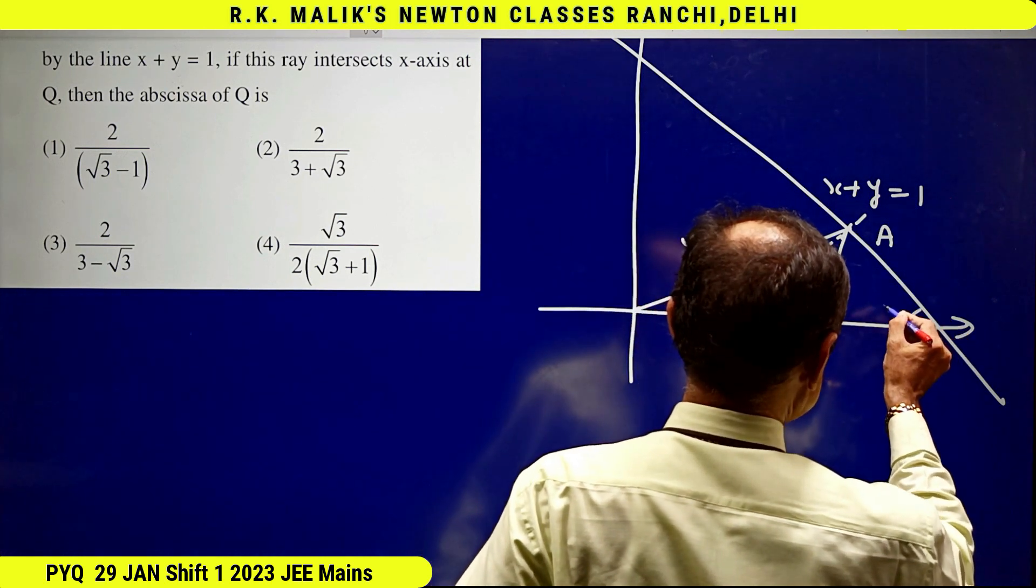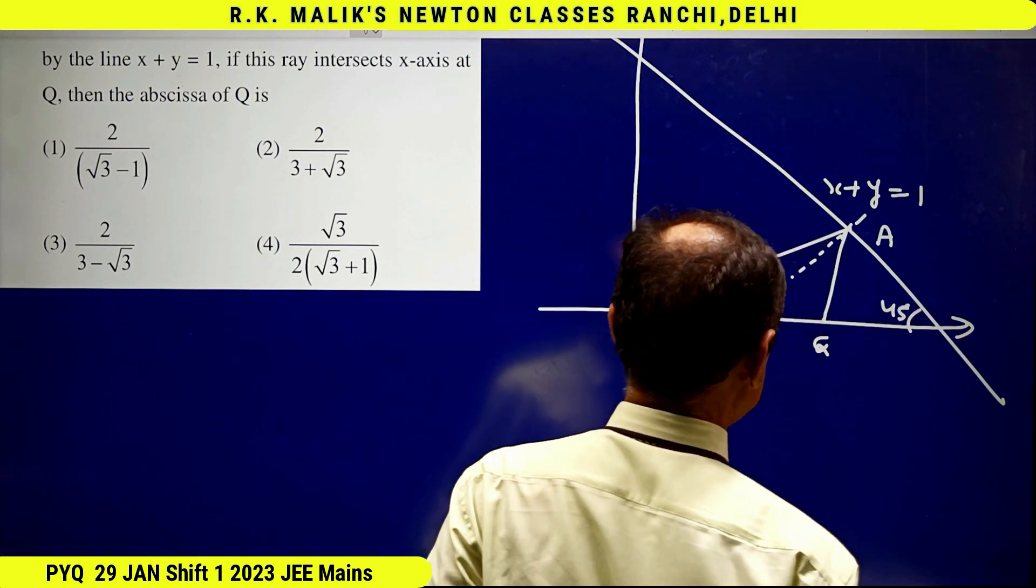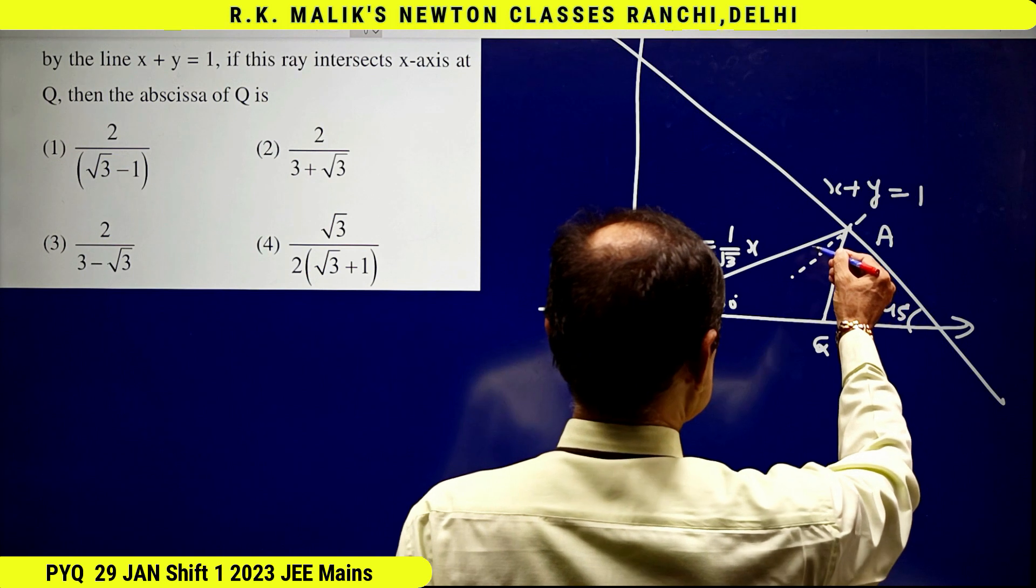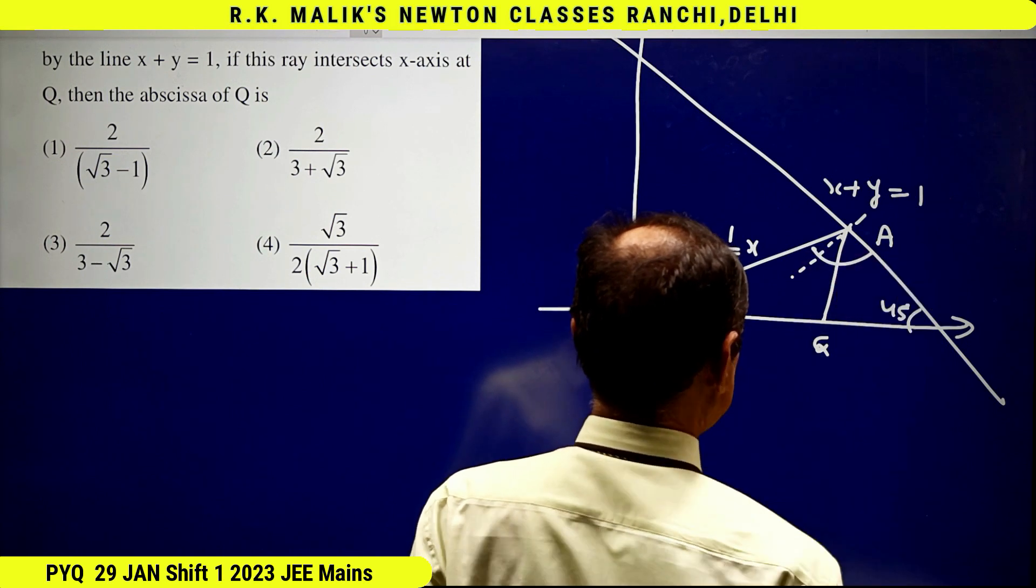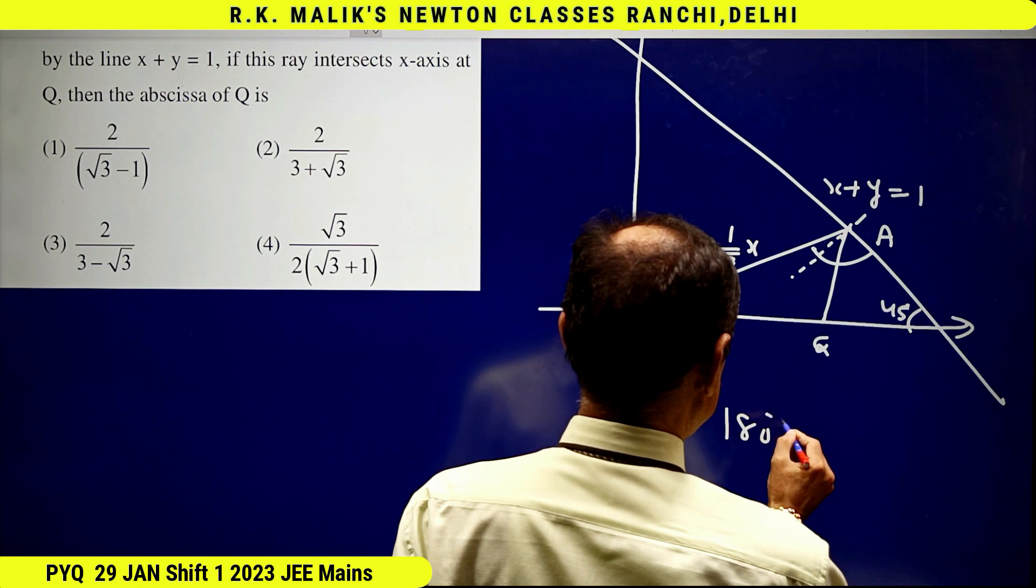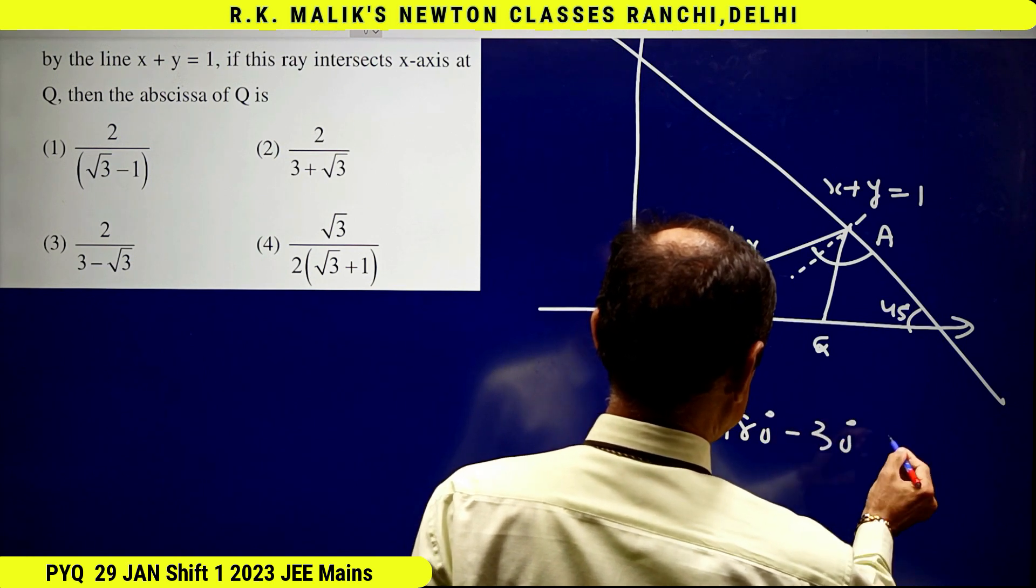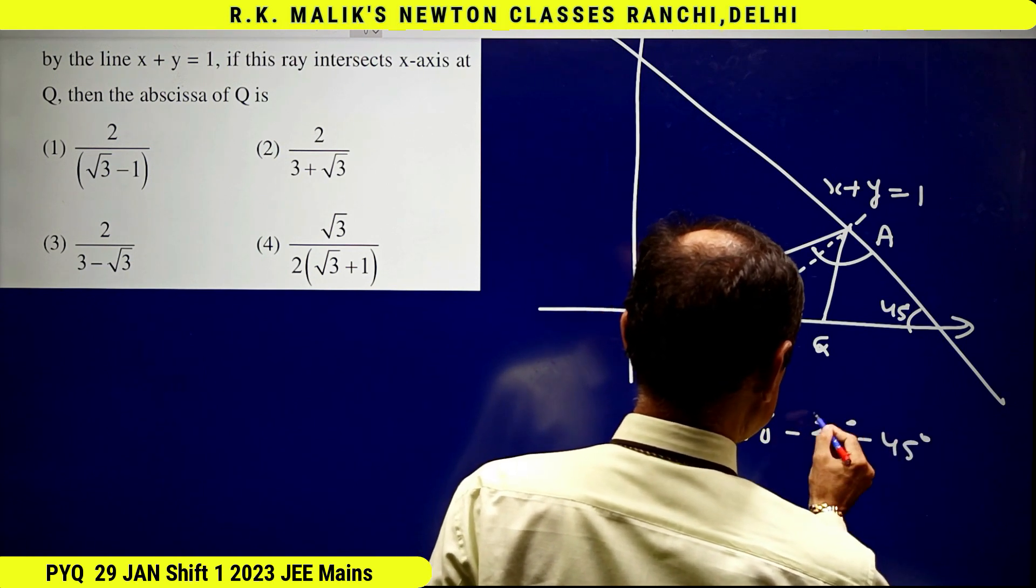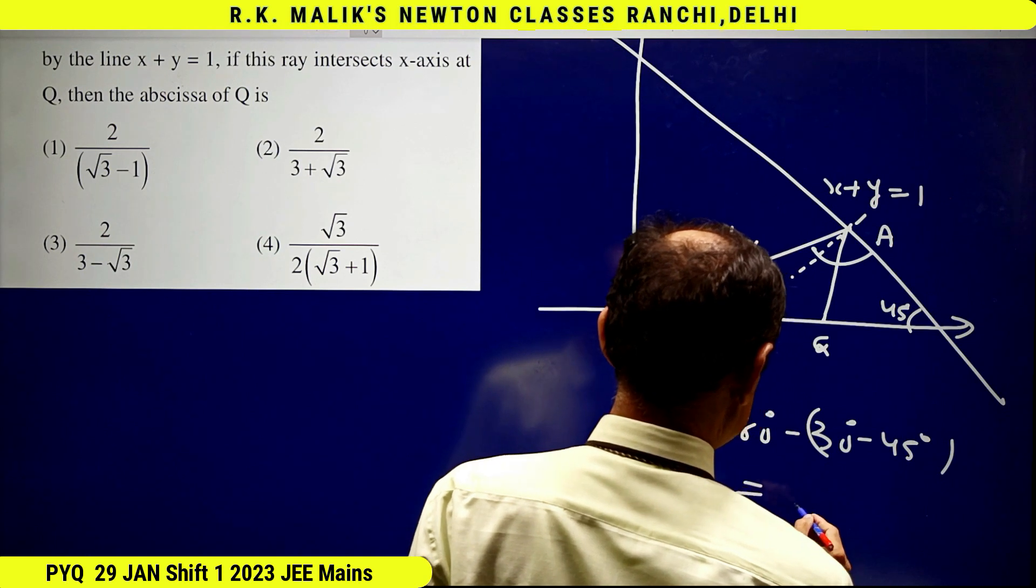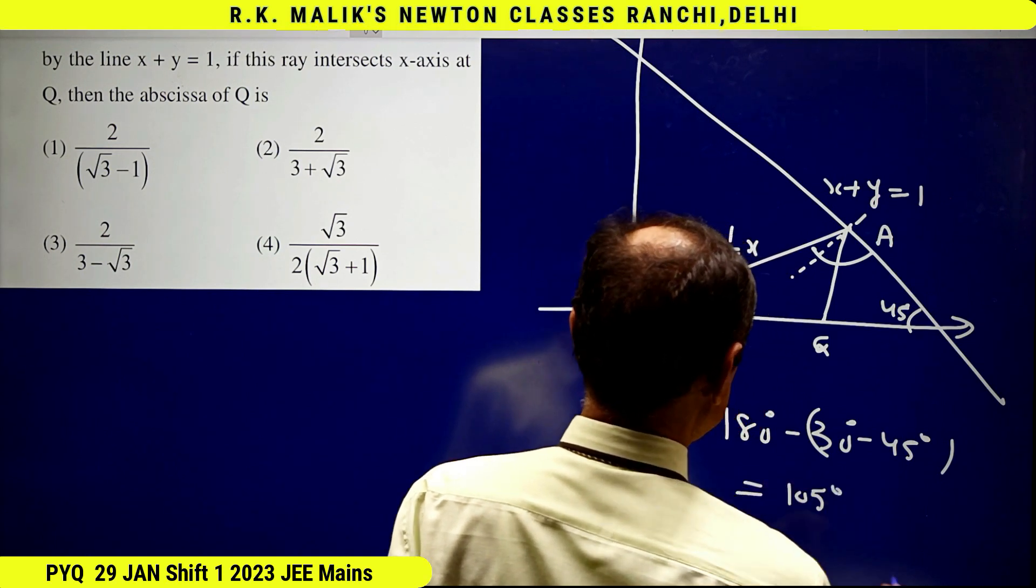Clearly, this angle is 45 degrees. Hence, this whole angle is 180 - 30 - 45 = 105 degrees.